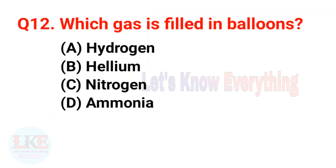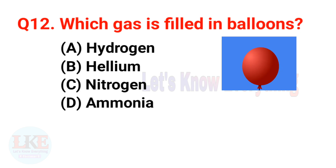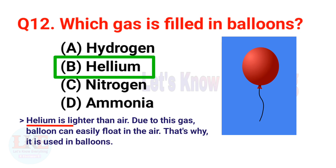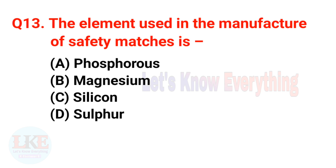Question 12: Which gas is filled in balloons? A) Hydrogen, B) Helium, C) Nitrogen, D) Ammonia. The right answer is option B, Helium. Helium is lighter than air, which is why a gas balloon can easily float in the air. Helium is a noble gas.